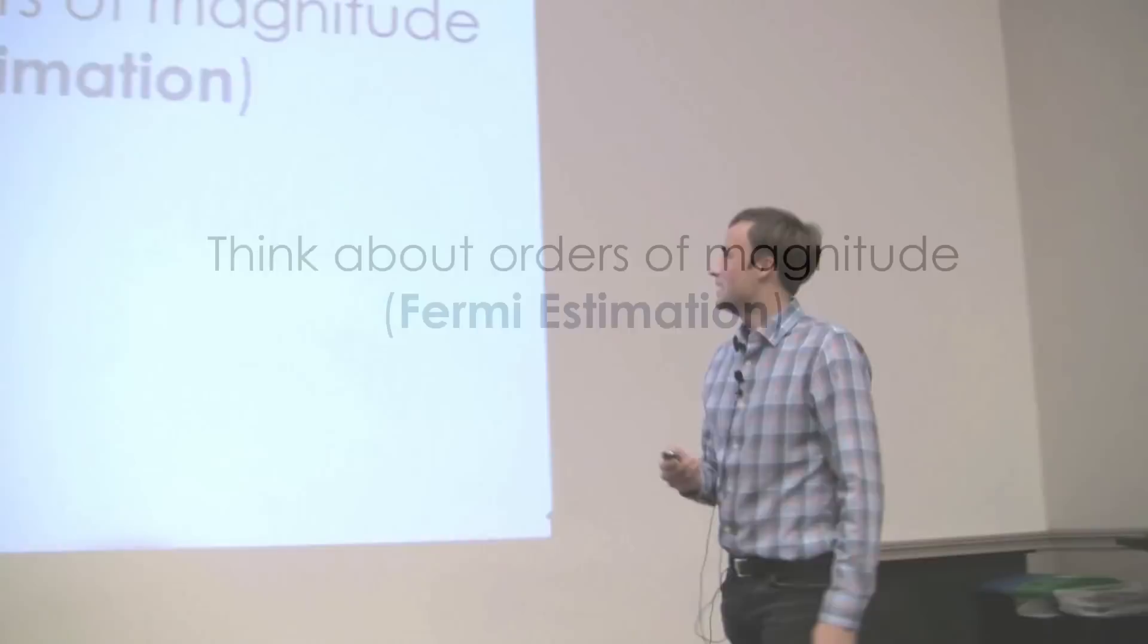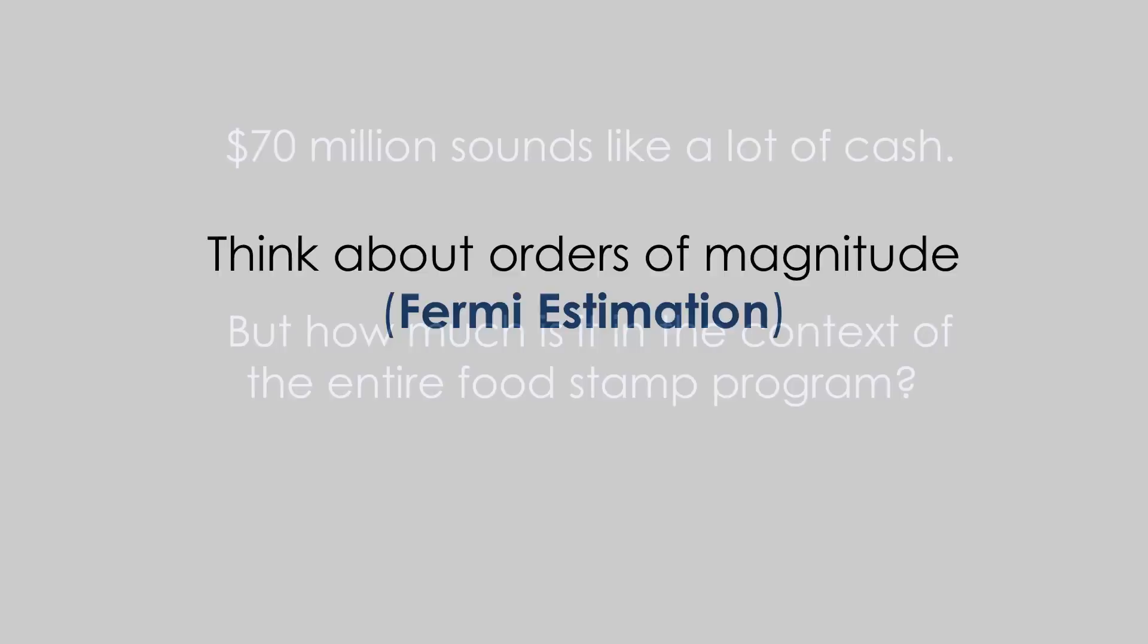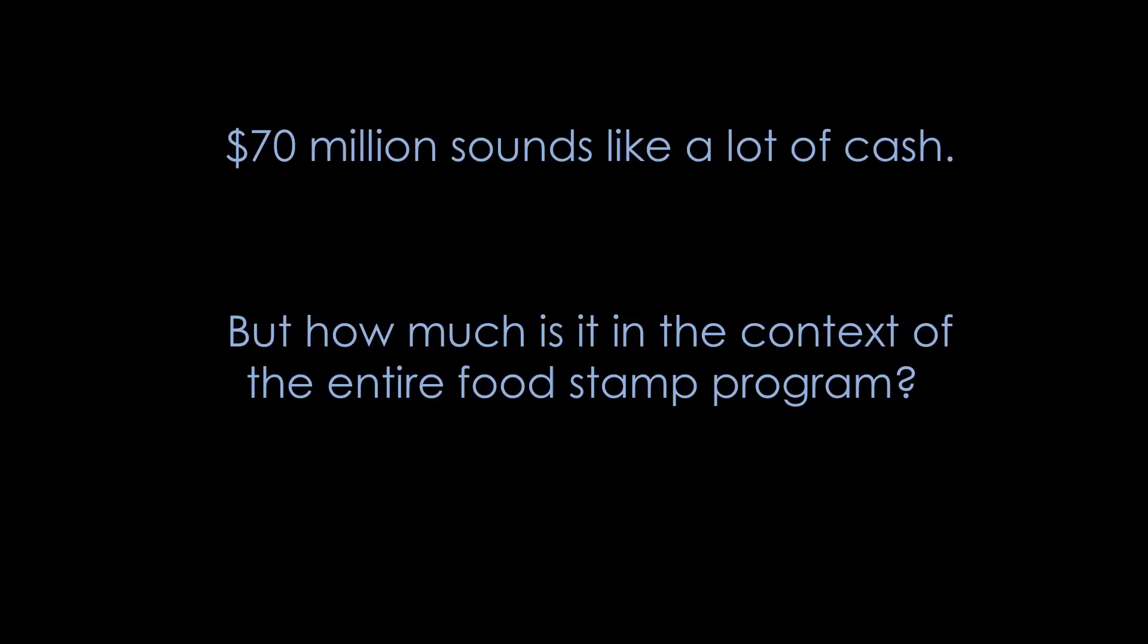So let's use Fermi estimation here to see if we can quickly either debunk this or say maybe we should can the program. $70 million sounds like a lot of money. How much in the context of the entire food stamp program is sort of what we're getting at?